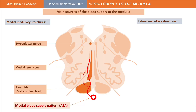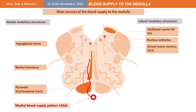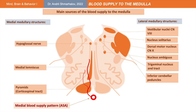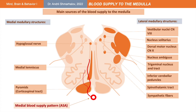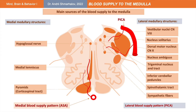Moving to the lateral medullary structures: here we can see concentrations of different cranial nerve nuclei like vestibulocochlear, glossopharyngeal, and vagus nerve. Also there is the trigeminal sensory nucleus. The most lateral site is occupied by the inferior cerebellar peduncles. In the lateral medulla we can see the ascending spinothalamic tract concerned with pain, touch, temperature, crude touch, and pressure. Also we can find sympathetic fibers running down from the hypothalamus to the spinal cord. All of these structures are mostly supplied by the posterior inferior cerebellar artery and can be involved in a vascular lesion.